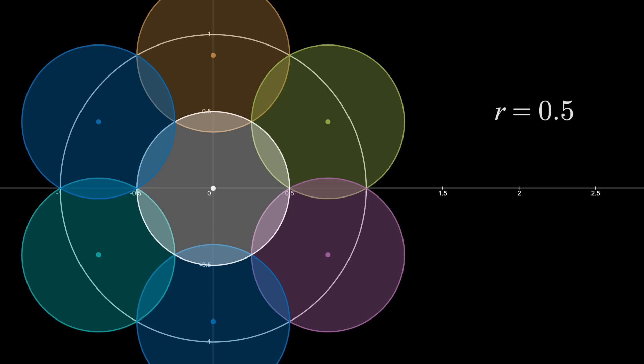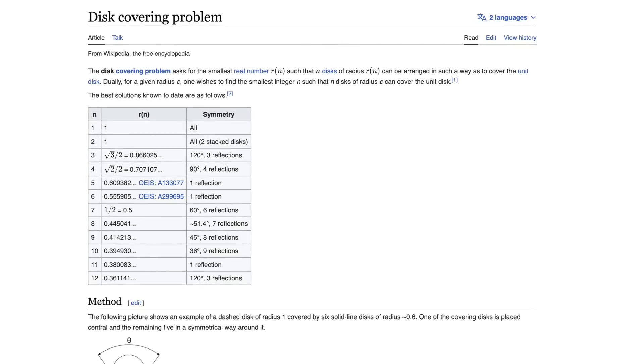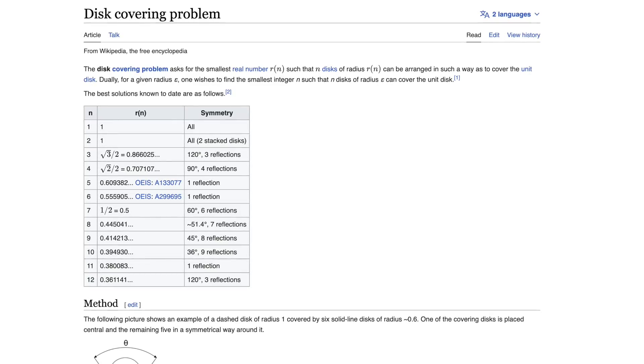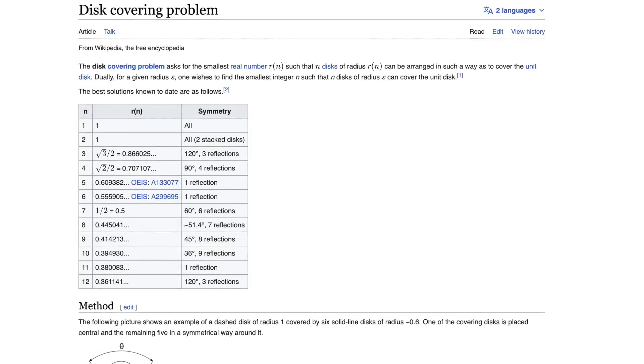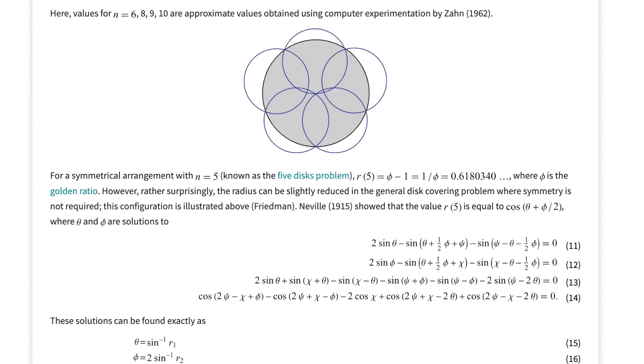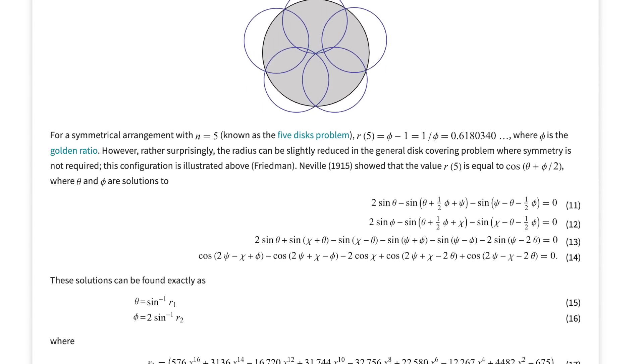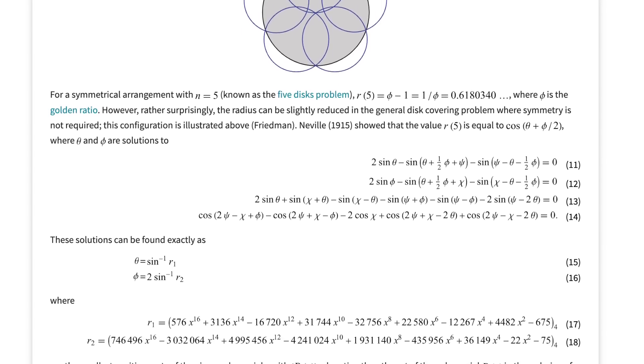Now, if you want to look further into this, then look up the disk covering problem. What's interesting is this becomes an extremely difficult question, depending on how many water fountains you have. If we ask for 5 instead of 7, the solution is, well, beyond me. Because here you can see on Wolfram Alpha where you have to solve a lot of stuff. So yeah, 3, 4, and 7 are actually examples with much simpler solutions.